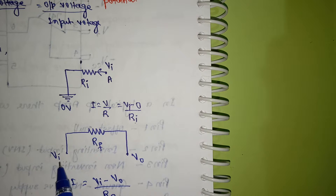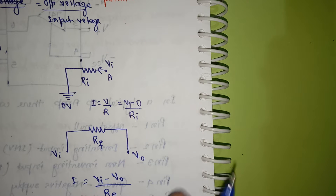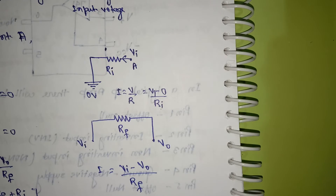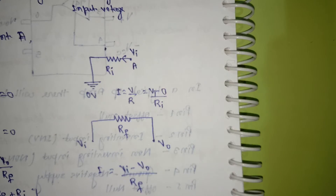For the feedback resistance RF, from the virtual ground concept the voltage at point A is VI, and the output is V-naught. By Ohm's law, the current I2 through RF is equal to VI minus V-naught divided by RF. Applying KCL at point A gives us I1 plus I2 equals zero.